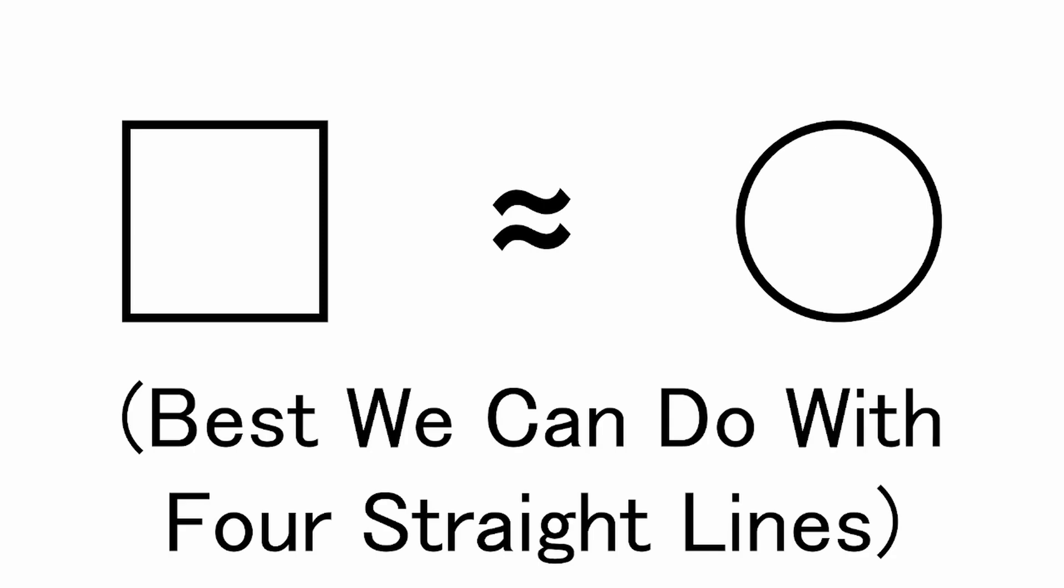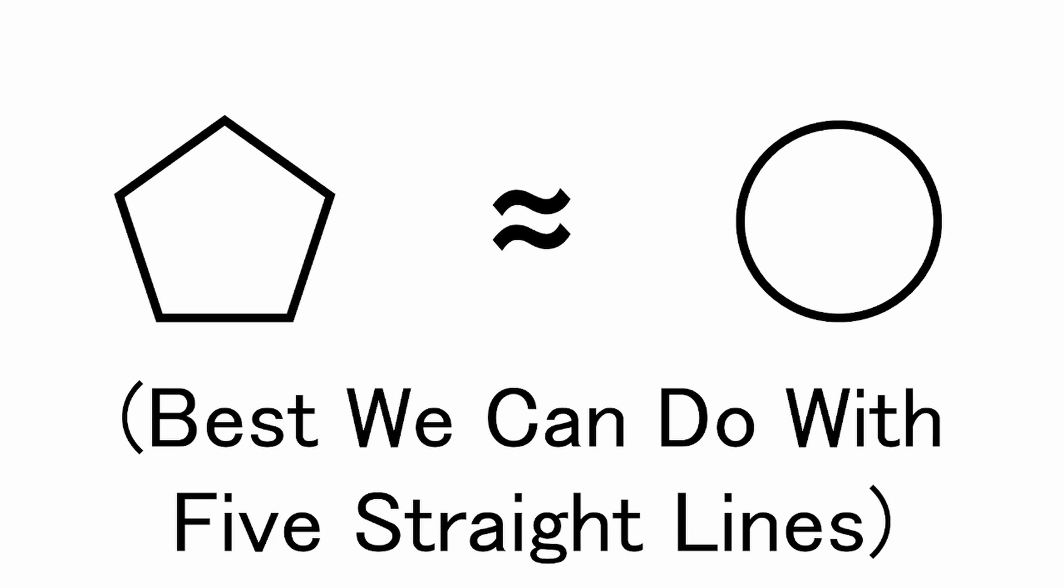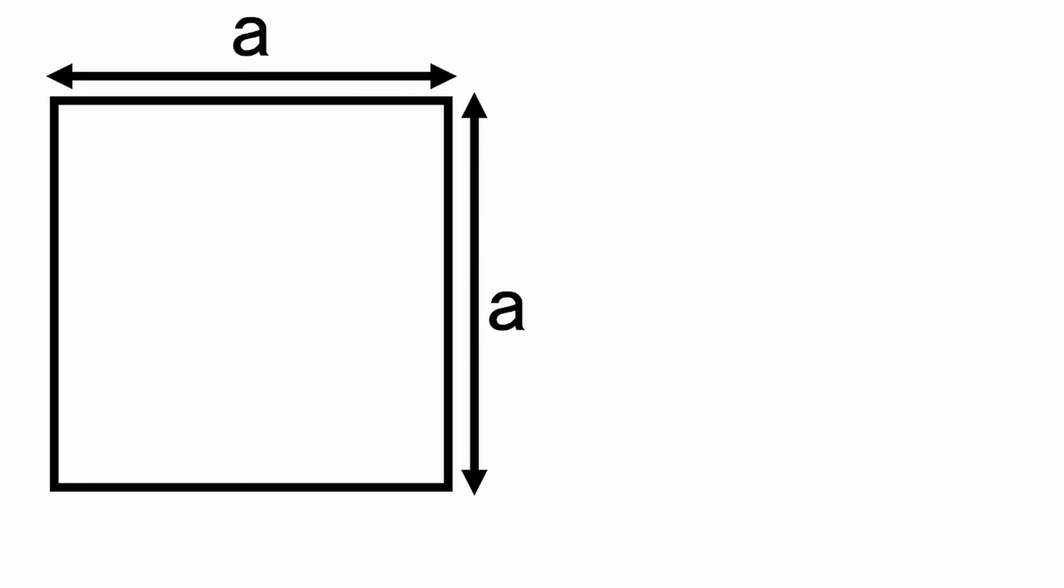Similarly, a pentagon is the best approximation of a circle you can get with five straight lines of equal size. But back to the square, the area of this four-sided regular polygon is a squared, where a is the length of one, and thus all of its sides.